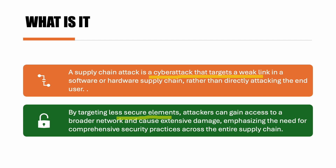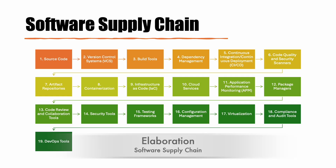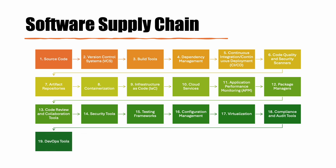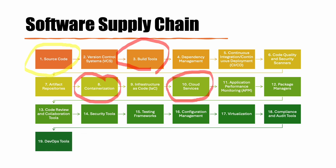By targeting weak links, attackers can gain access to a broader network and cause extensive damage. This emphasizes the need for comprehensive security practices across the entire supply chain. When we speak about the software supply chain, there are multiple different entities which could be present — you can go through these details on screen.